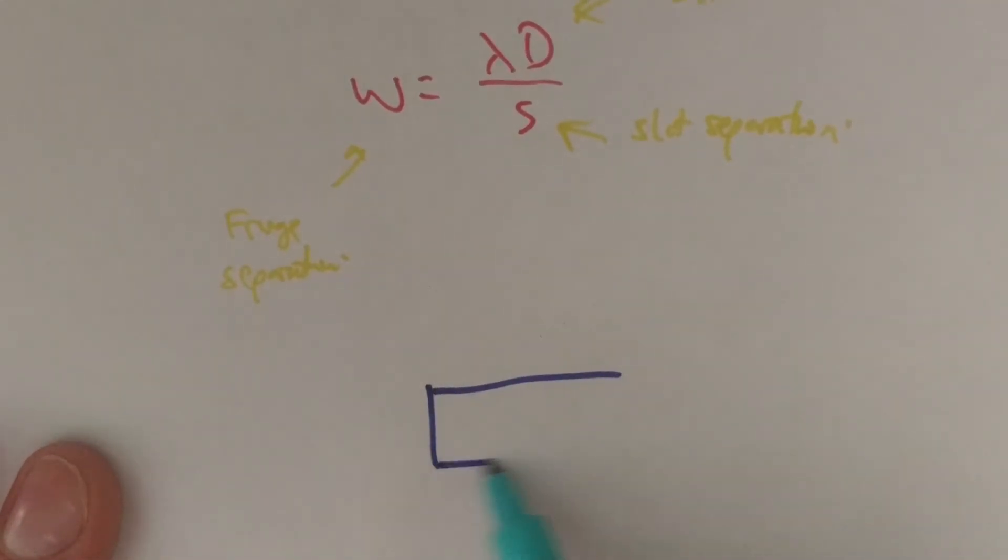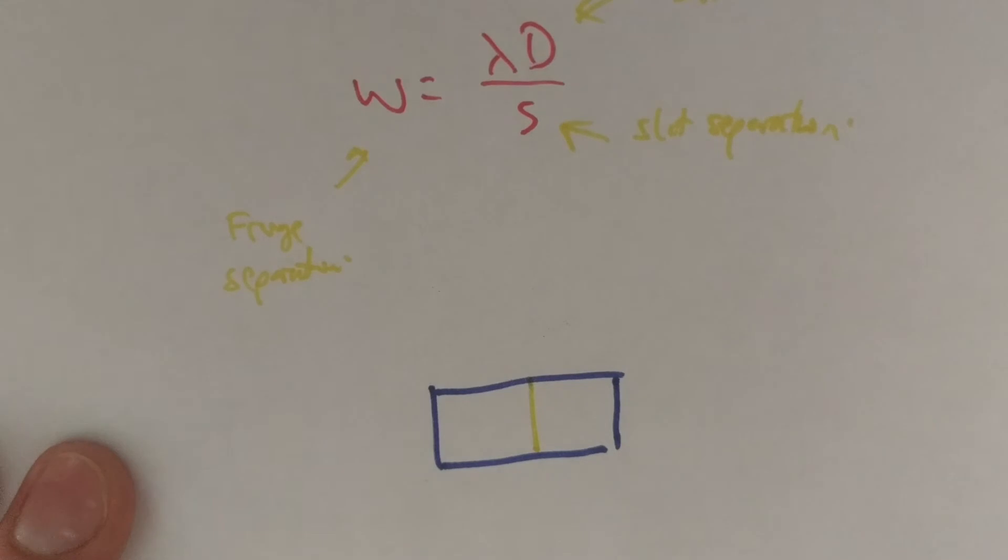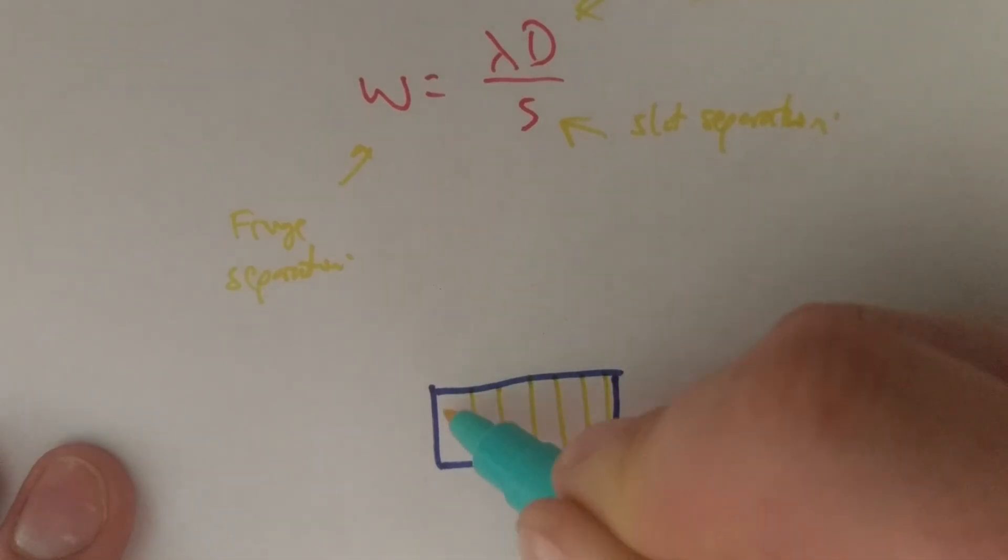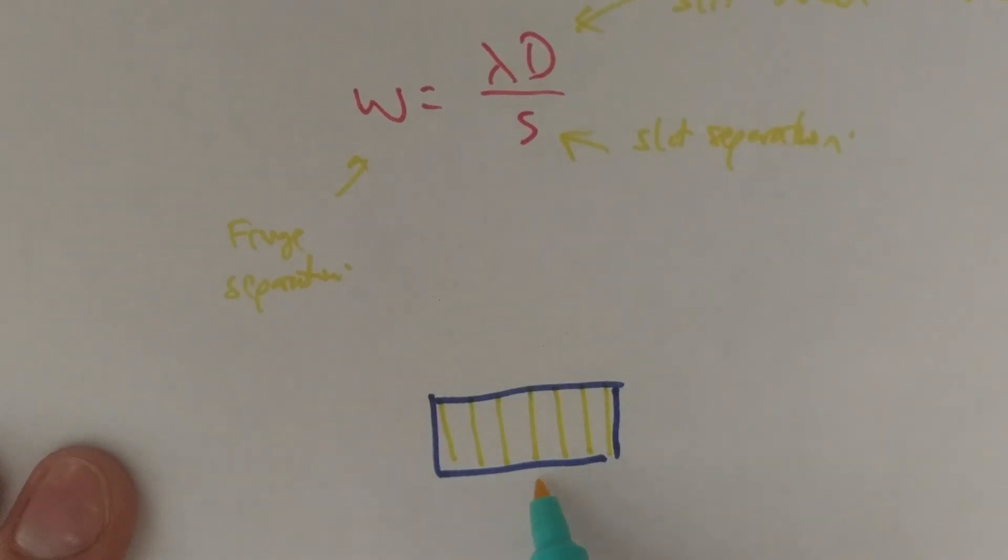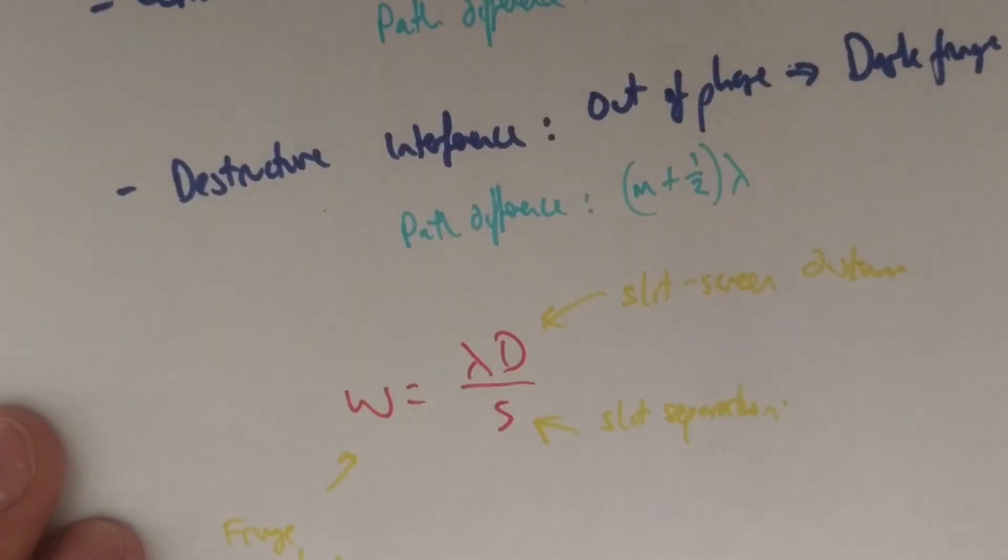The result of the Young's double slit experiment—that was our screen there—what we would see right in the center, we would get a bright fringe because it is equidistant from each slit, and we would see alternating dark and bright fringes. So it would be dark fringe, bright fringe, dark fringe, bright fringe, and so on. And the distance between the fringes is given by this equation here.